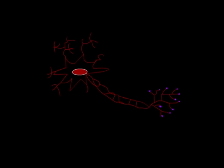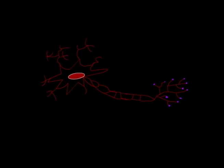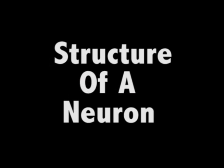Action potential commonly occurs in neurons, muscle fibers, and endocrine cells. Structure of a neuron.